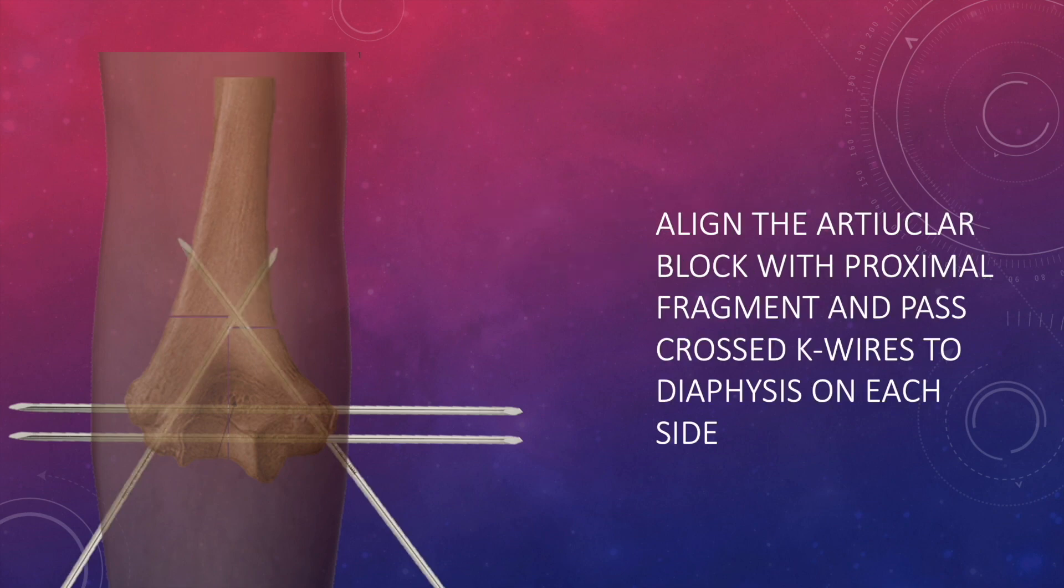Then you have to align that articular block with the diaphysis or the metaphyseal region which is part of the proximal fragment. Then you have to pass two crossed K-wires from the lateral condyle and medial condyle and they have to exit from the proximal fragment on the opposite side.